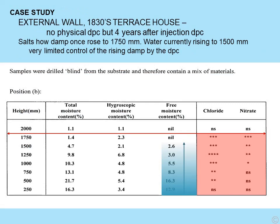The last of these case studies is an old external wall of an 1830s terrace house that had been damp proof coursed. Salts show that water once rose to 1,750 mm; however when profiled it showed free water present to 1,500 mm — it had only dropped a slight amount from 1,750 to 1,500 mm. For practical purposes this damp proof course was not effective.